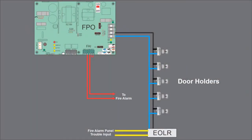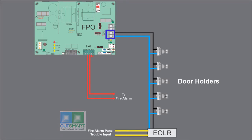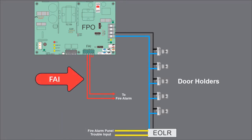We can use the FPO alone to power and control fire system door holders. Simply use DC2 on the FPO to power the door holders. Drop the doors by activating the fire alarm interface. An end-of-line relay can be used for supervision.